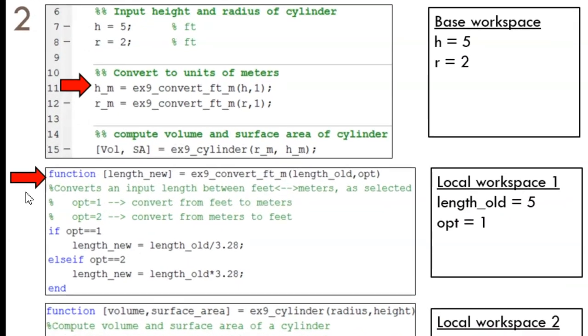Now at the point of the first function call, the main script is paused on its line until it receives the result from the function. Inside the function, the variables length old and opt have values copied into them. Length new will not exist until we reach a statement that creates it.